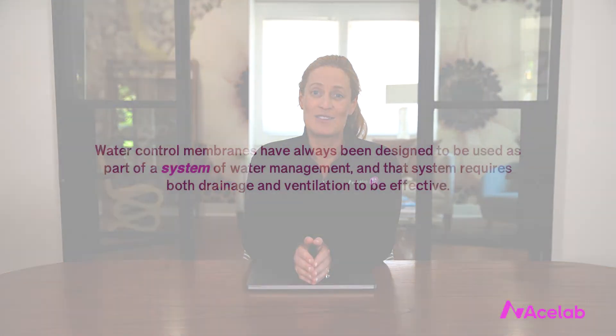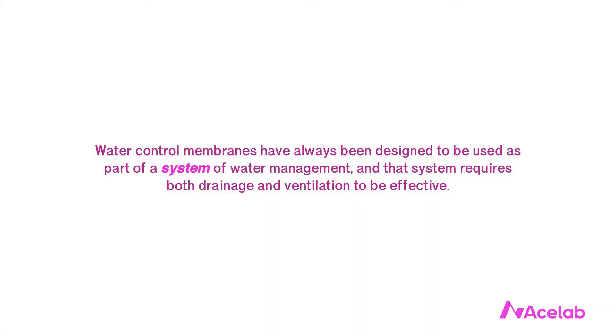This is not because the membranes are defective, nor because they have been incorrectly installed. Water control membranes have just always been designed to be used as part of a system of water management, and that system requires both drainage and ventilation — drying — to be effective. Now often, when people use the term rain screen, they're really just intending to emphasize the importance of the space between the WRB and the cladding, and communicating that this space ought to be created by the deliberate inclusion of some kind of material like furring strips, cladding clips, or drainage mats. This is a reasonable thing to want to communicate. Drained walls are a system, and the amount of drainage and ventilation that system requires is indeed relevant.